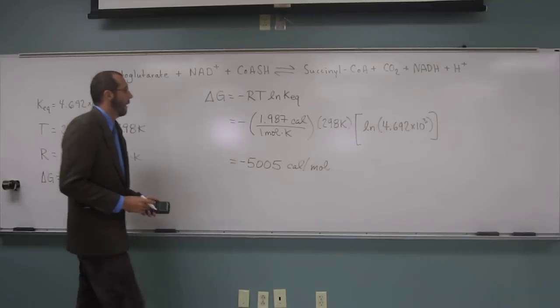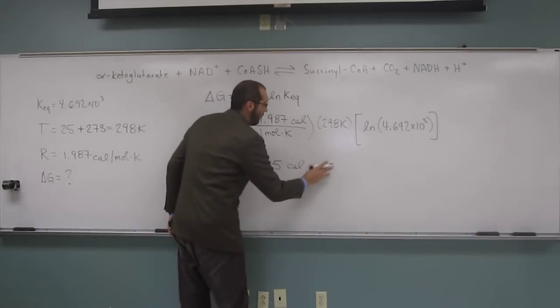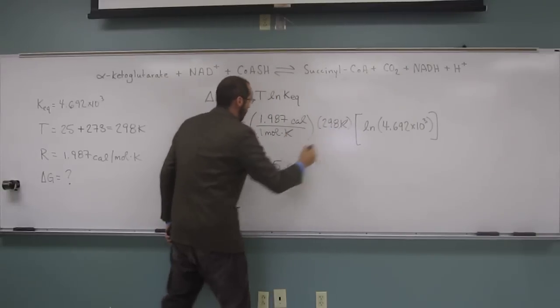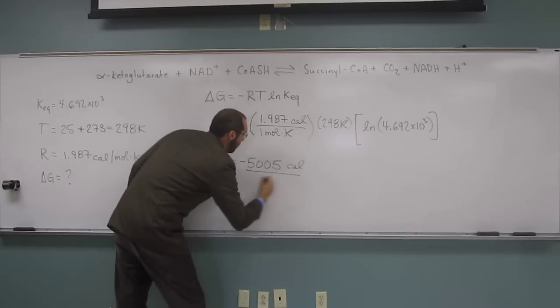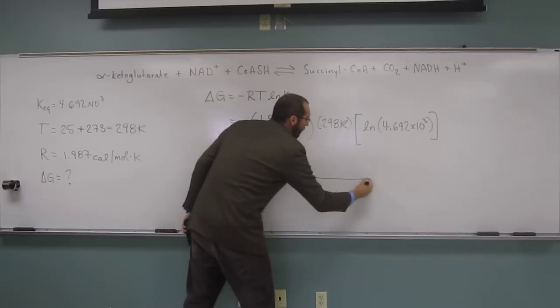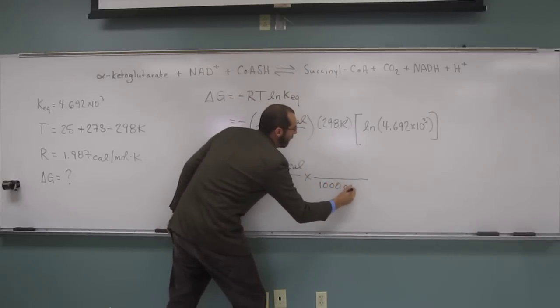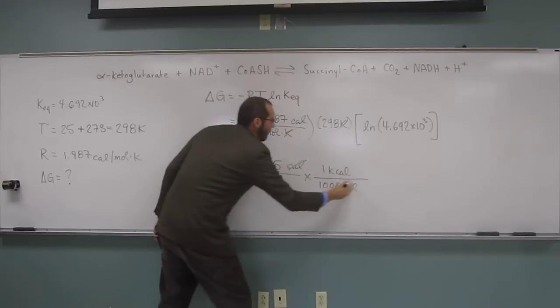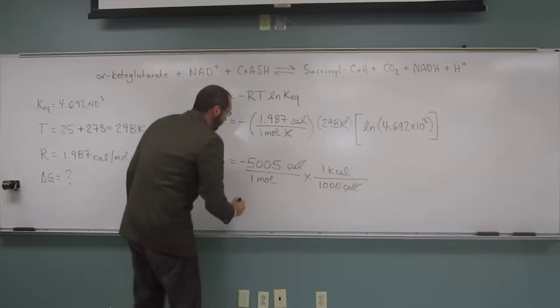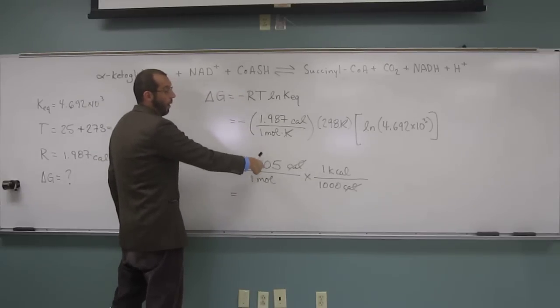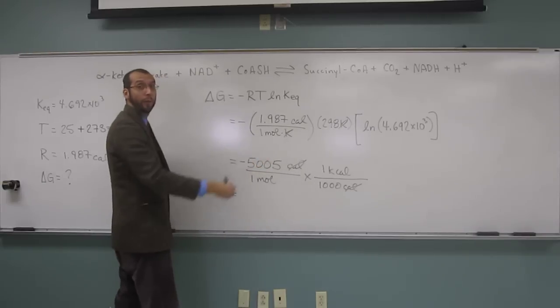but we want to convert this to three significant figures and to kilocalories. So remember that this is per one mole. How many cals are going to kilocalories? A thousand. So when we do that, we're going to get negative 5.005 kilocalories per mole.